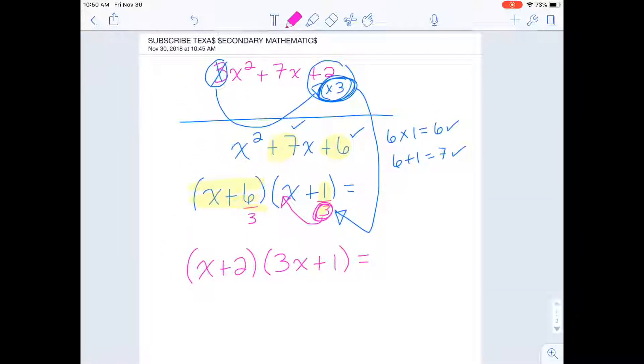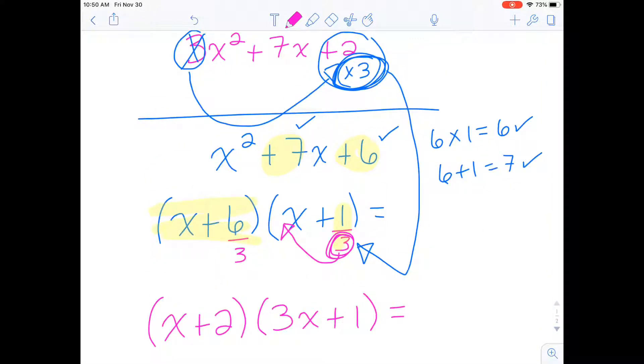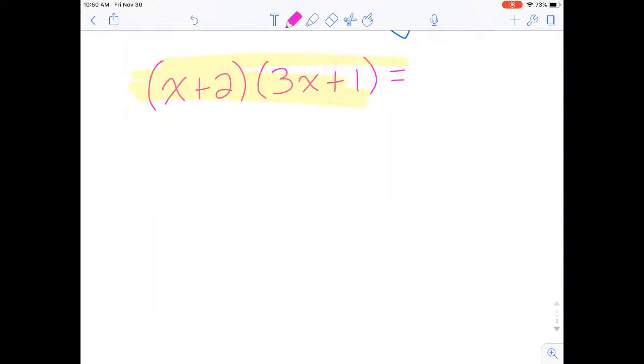And so now we are going to check and let's see if our answer down here or our two factors at the bottom equal up to the original problem that we had up here: 3x squared plus 7x plus 2. So let's check ourselves. Let's do our multi-distribution. Let's start here. 1x times 3x is 3x squared. 1x times 1 is 1x.